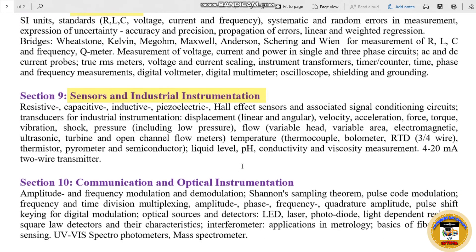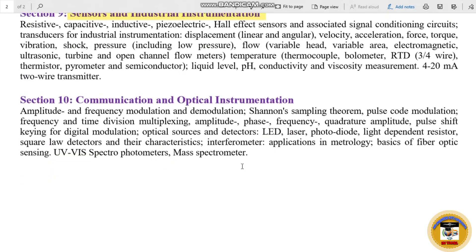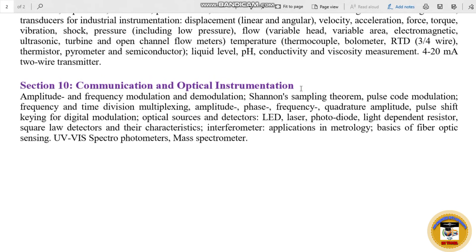Section 10 is Communication and Optical Instrumentation. Topics include: amplitude and frequency modulation and demodulation, sampling theorem, pulse code modulation, and frequency and time division multiplexing.